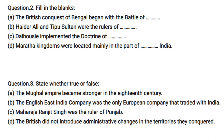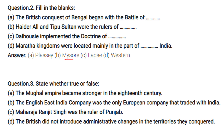Fill in the blanks: The British conquest of Bengal began with the Battle of Plassey. Hyder Ali and Tipu Sultan were the rulers of Mysore. Dalhousie implemented the Doctrine of Lapse — we call it 'Vilay Niti.' The Maratha kingdoms were located mainly in the western part of India.